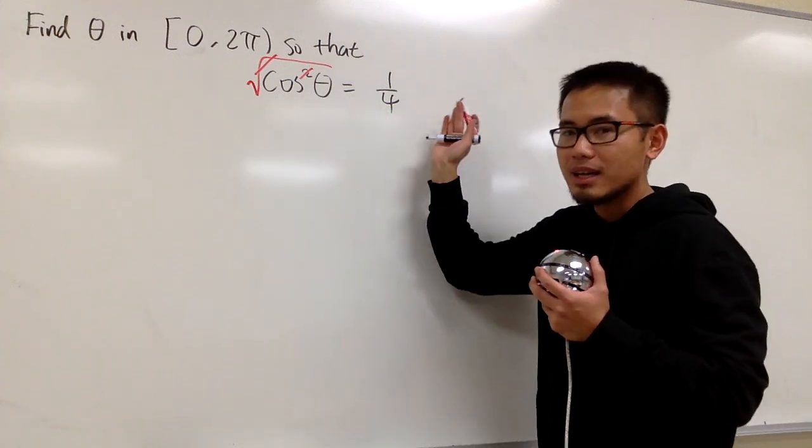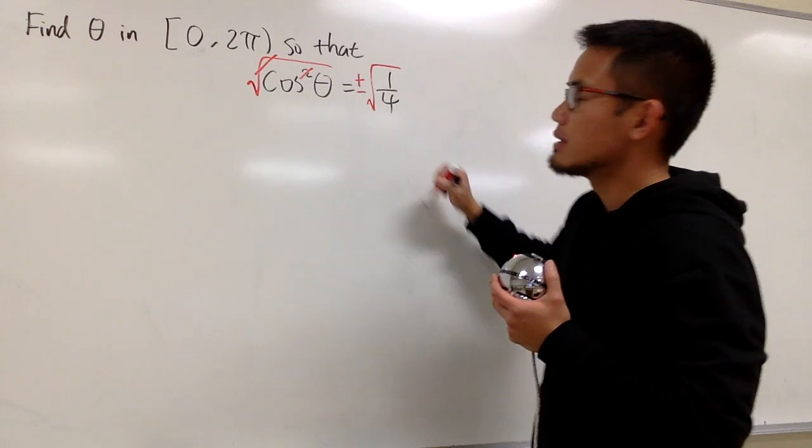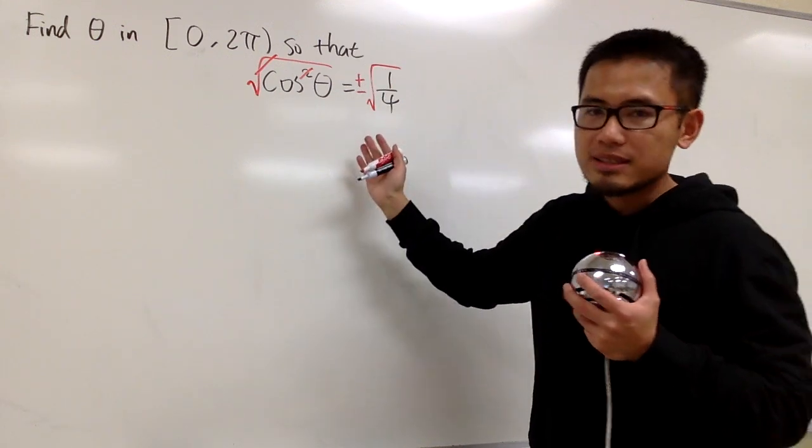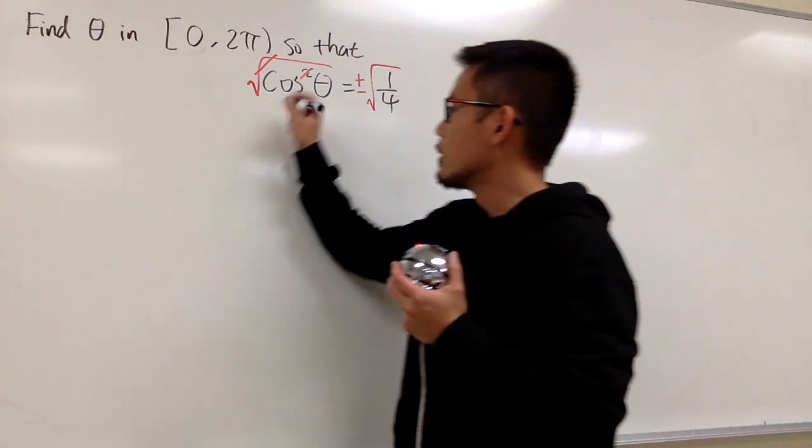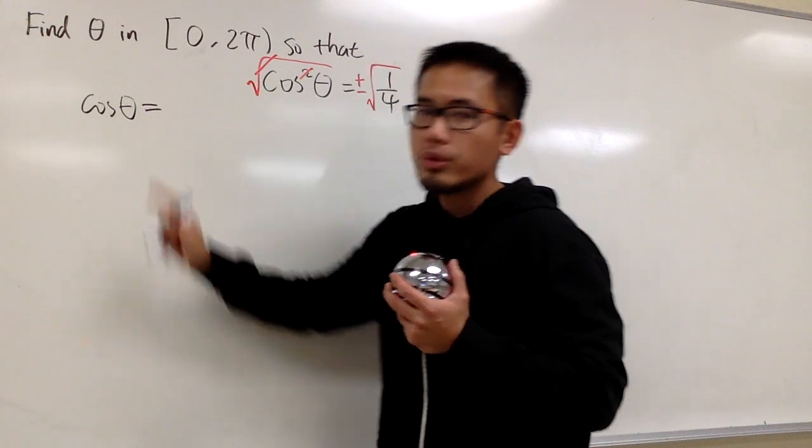And we do the same thing on the right-hand side. So we do that, and be sure when you do this, include the plus-minus on the right-hand side. So in this case, in fact, we have to work out two situations. The first one is cosine theta equal to